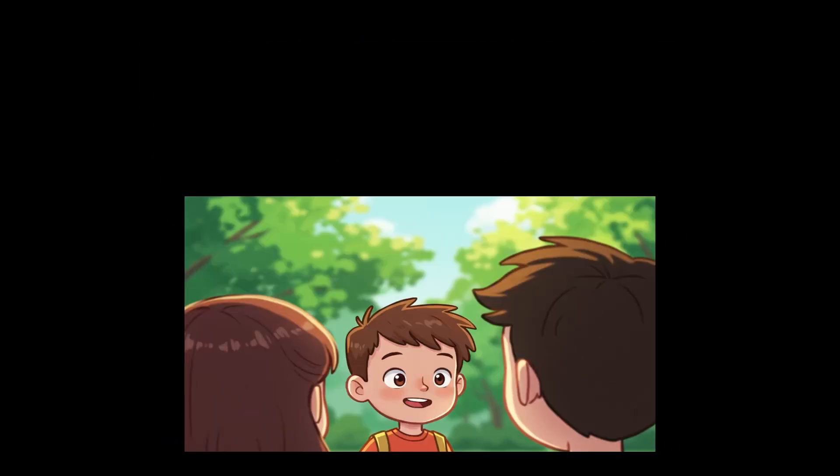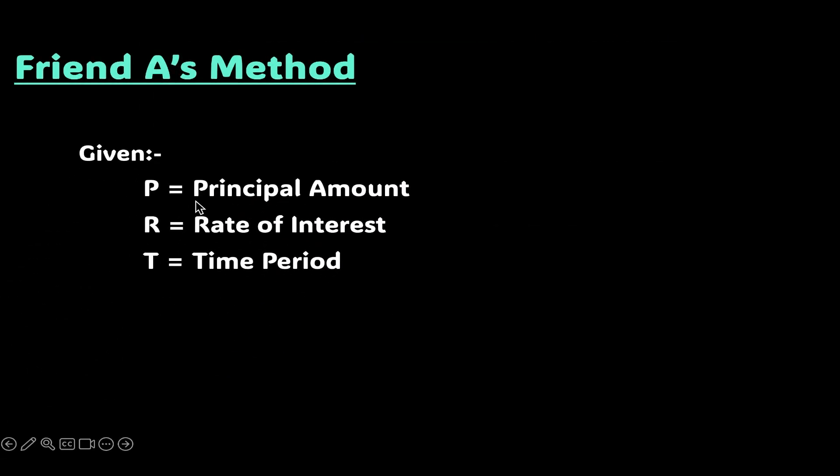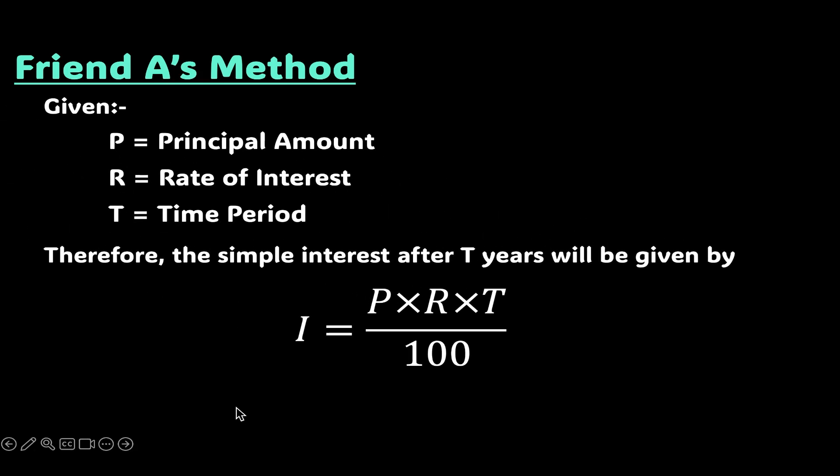Friend A comes forward with a plan as shown. Principle is P, rate of interest is R percent per annum and time period is T years. So, the interest after T years would be P times R times T over 100 which we are denoting by uppercase I. This is simple interest, isn't it?